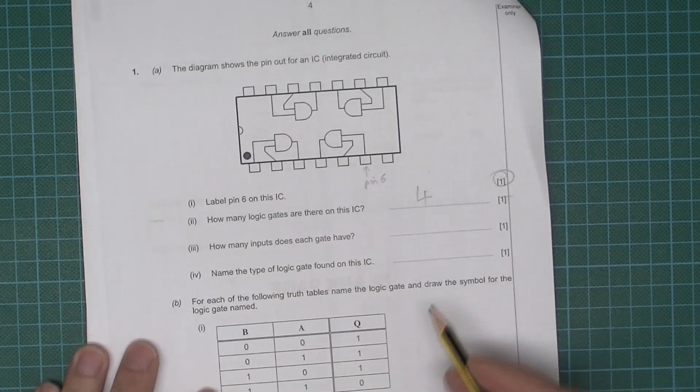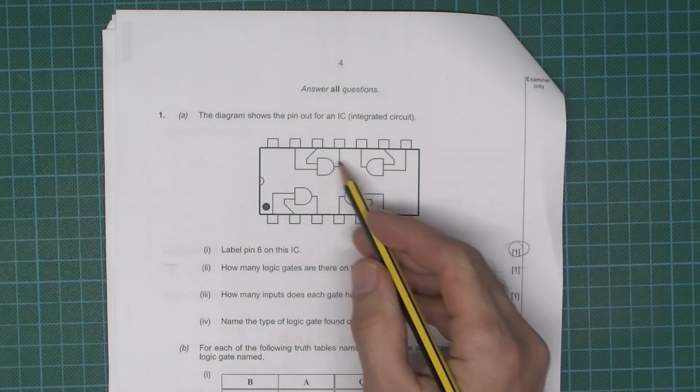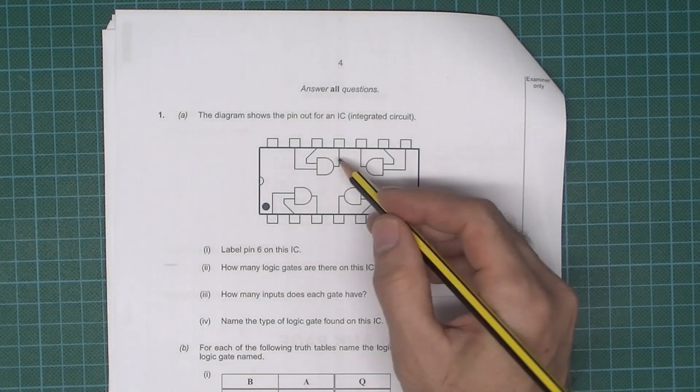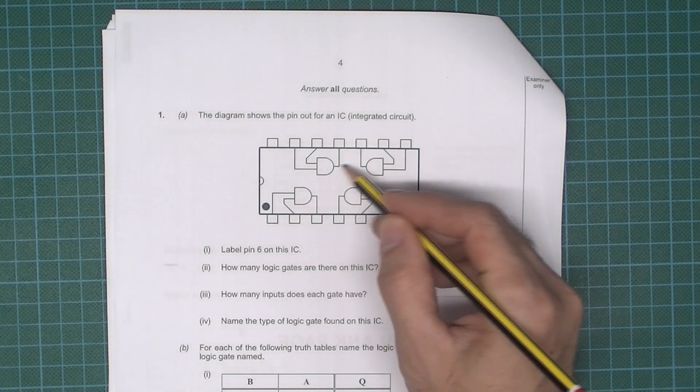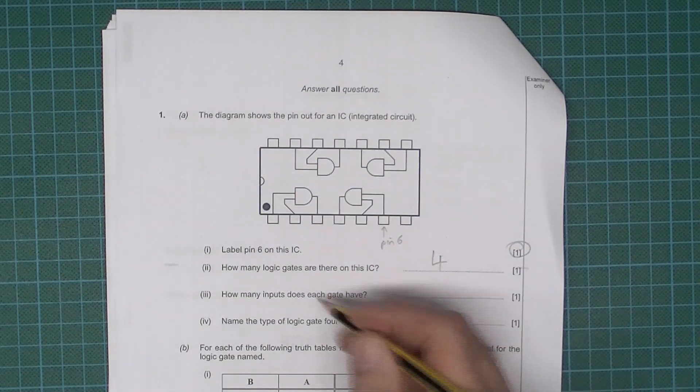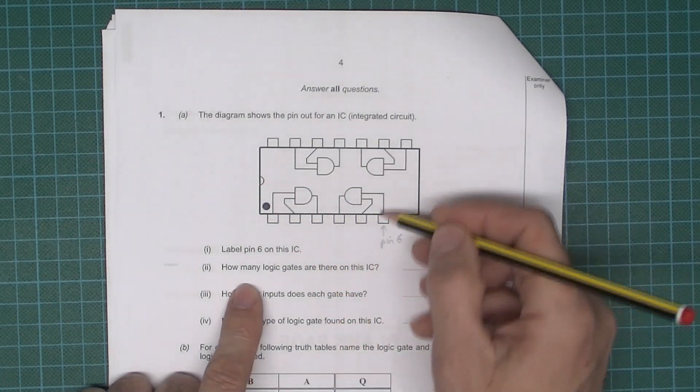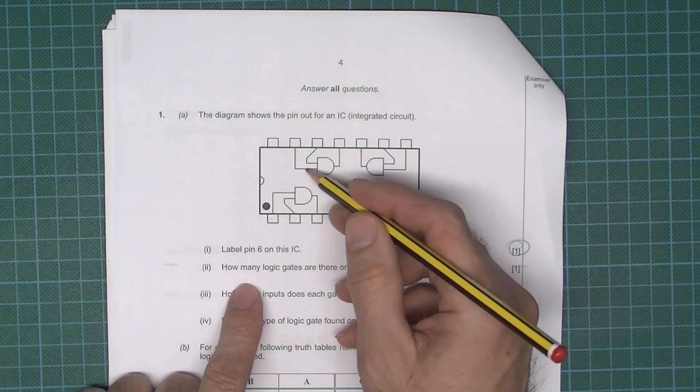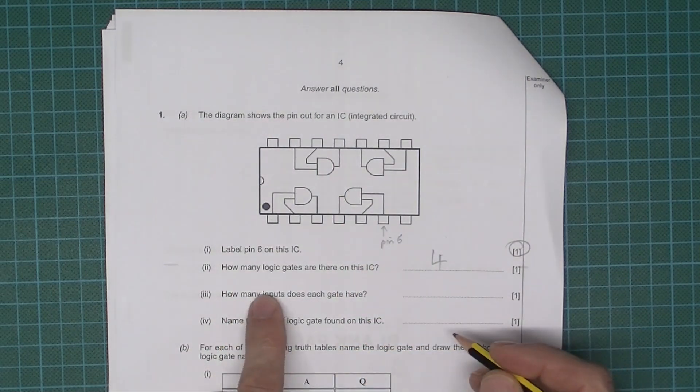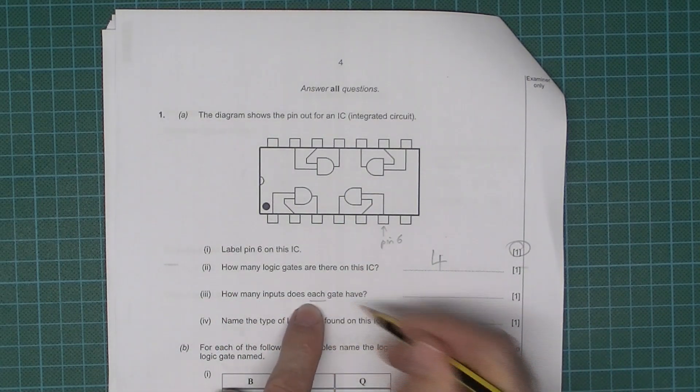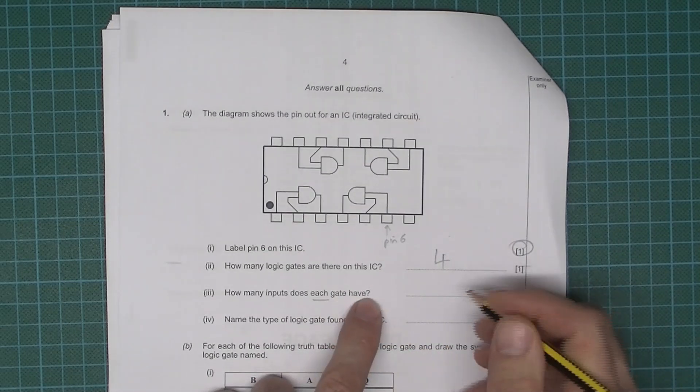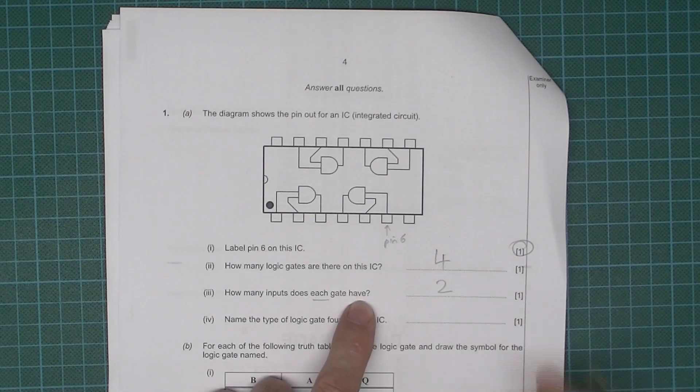How many inputs does each gate have? Well once again this should be quite easy. Hopefully you can see that this is the output and there are two inputs. Each one of them has exactly the same type of logic gate, that is a 2 input AND gate. So how many inputs does each gate, not total but each gate have? And that's going to be 2.